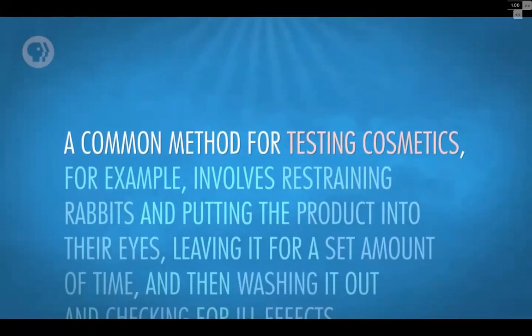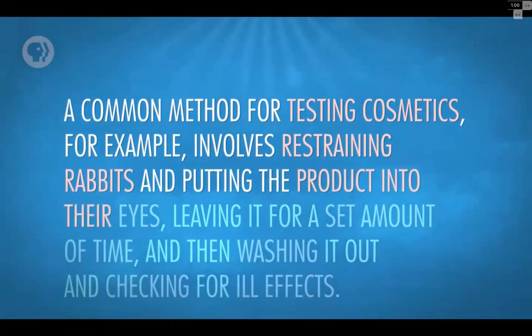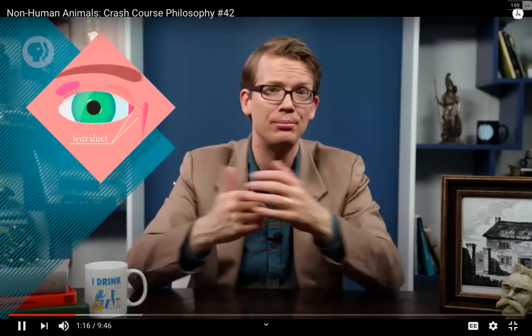How do we reconcile the strong feelings many of us have about certain animals — mainly the cute ones like kittens and puppies — with the way we actually use animals in our own lives? Most of us think nothing of using non-human animals for their meat, milk, or skins, and using them in these ways almost always harms them. A common method for testing cosmetics involves restraining rabbits and putting product into their eyes, which can be extremely painful and often blinds them. On factory farms, chickens are housed in tiny cages, each bird occupying a space the size of a piece of standard printer paper. We'd never dream of using another human being in these ways, but we think nothing of doing it to non-human animals.